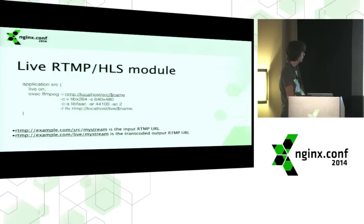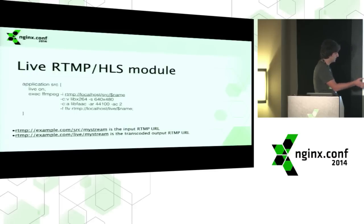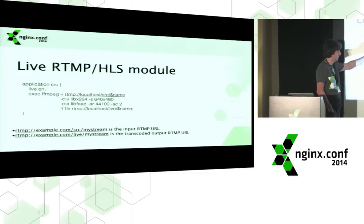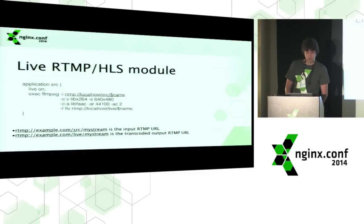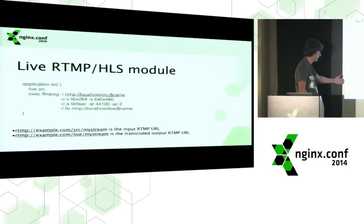Here is an example of how to transcode the stream. When a stream comes to this application, a directive runs an external transcoder like FFmpeg, which takes the stream from this application, transcodes it, and publishes it back under a different name to a different application. FFmpeg can do many things with the stream — transcode, change the size, change audio bitrates, or whatever. These are the URLs of the source stream and the transcoded stream.